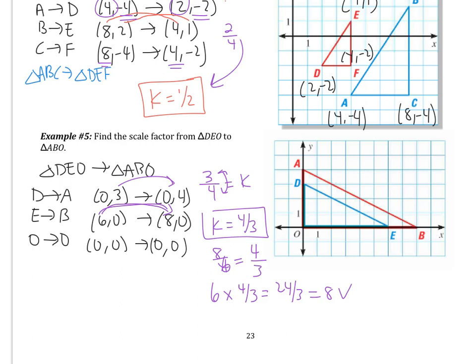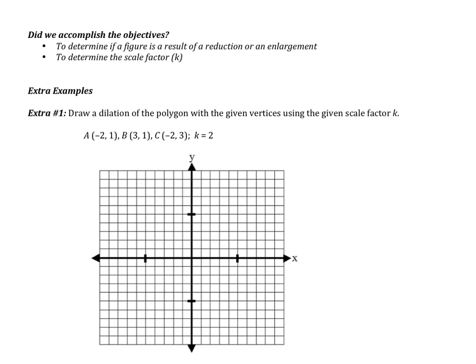Let's flip the page. Did we accomplish the objectives? The first objective was to determine if a figure is a reduction or an enlargement, and then we also wanted to determine the scale factor. When you come to class tomorrow, I'm going to be checking extra example number 1—draw ABC and then draw the dilation with a scale factor of 2. I'll be checking tomorrow to make sure this problem and the rest of the notes are done. If you have any questions, please write them down. Good luck!